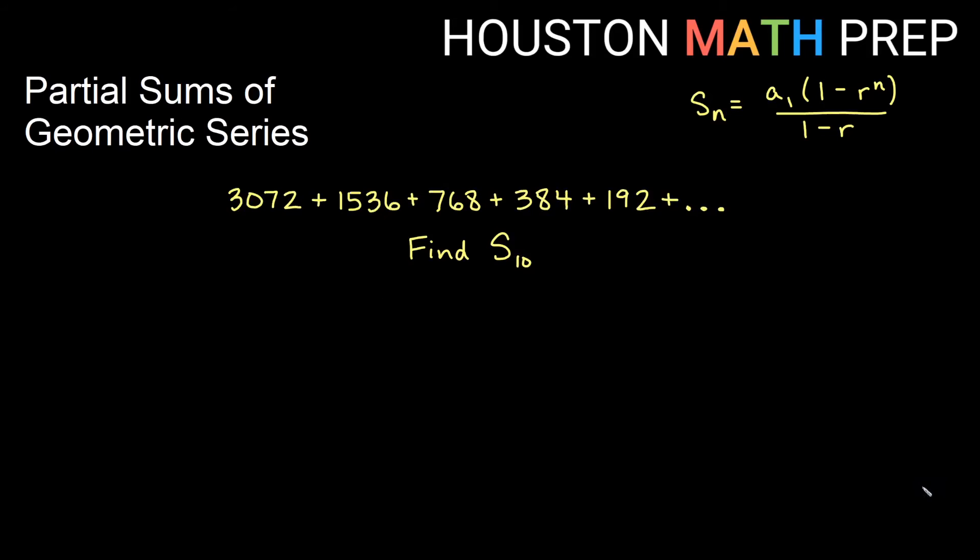Okay, last example here, 3072, 1536, 768, 384, 192. We're adding all those up. It's a geometric series. If you can tell by looking at these, you might notice that we are getting half as big from one term to the next. And if you can't, that's fine. Just take terms, divide them by the term before it. You'll see that you get a half each time.